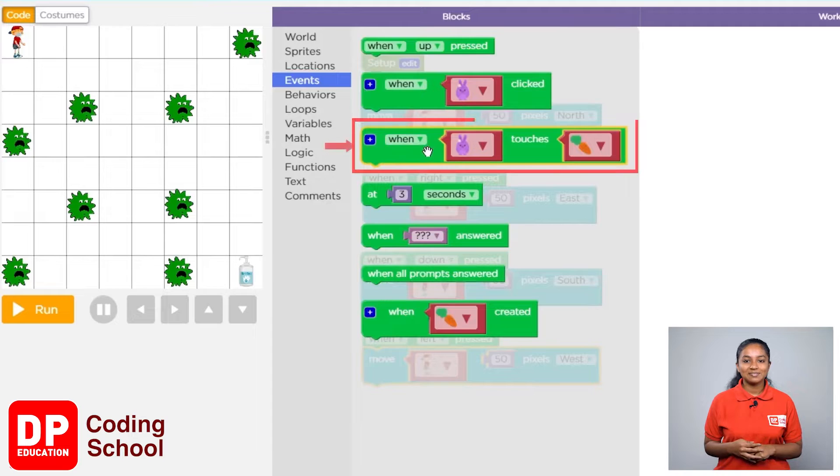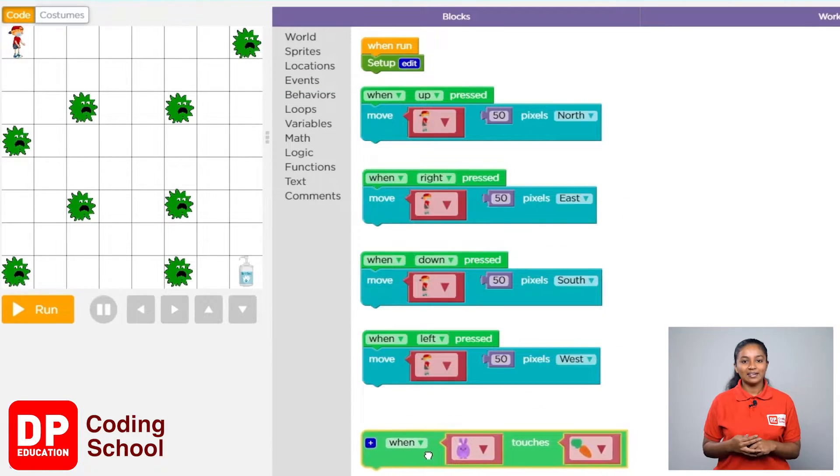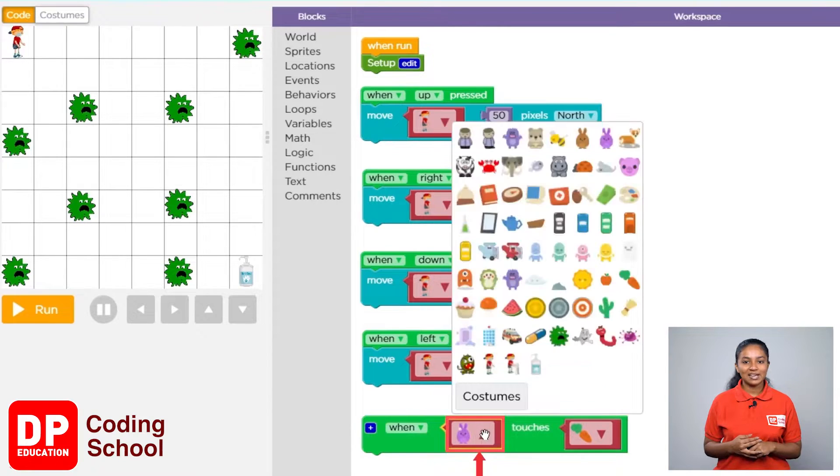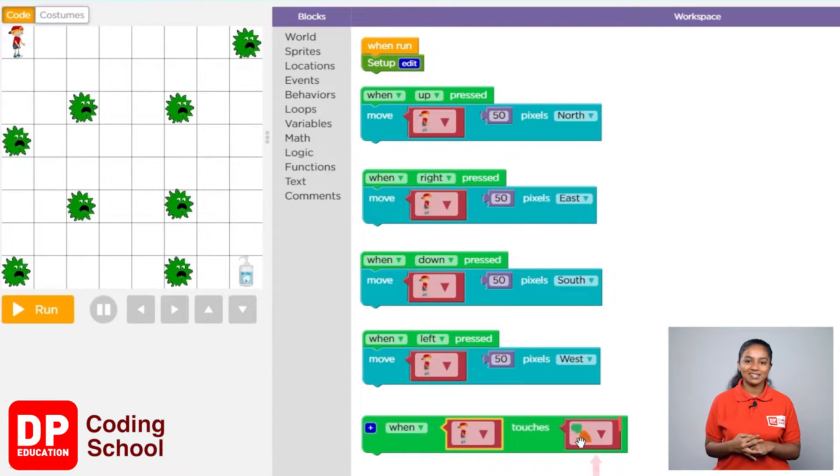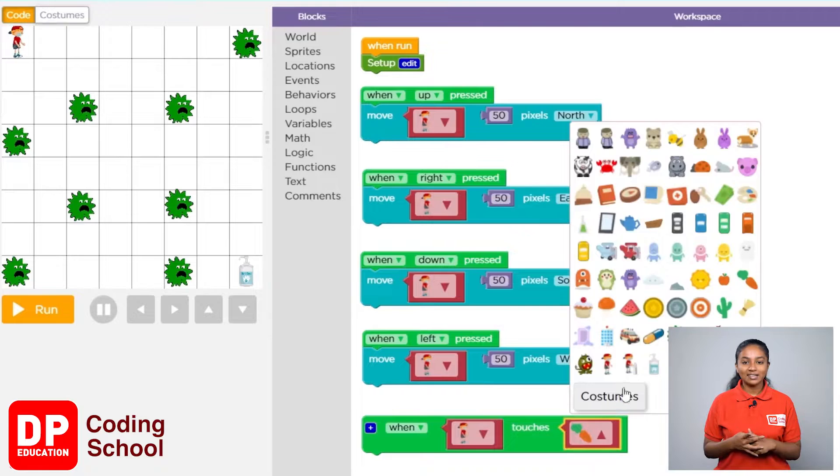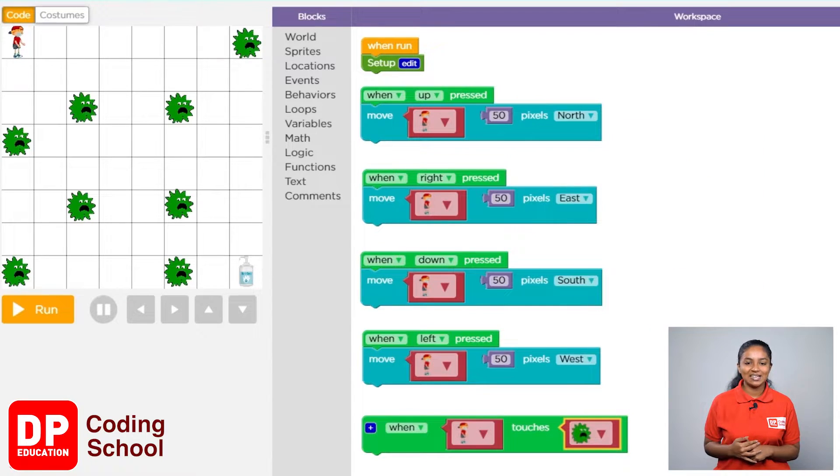I clicked on events. Drag the when touches block like this. After clicking the first arrow, the boy is selected. By selecting the second arrow, the covid virus is selected.